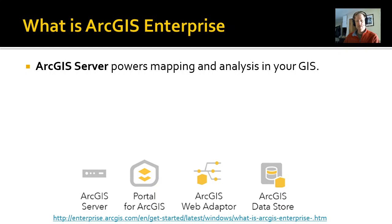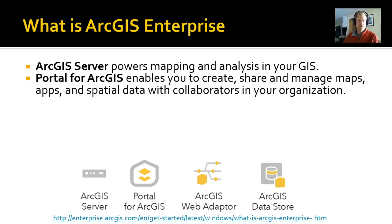The first and probably most important component is ArcGIS Server itself — this is what's powering your mapping, doing the work to retrieve and edit data and display maps. The next is the portal, which stores and manages those items. Just like in ArcGIS Online there were two things — the REST endpoint and the items catalog — these are those two things. ArcGIS Server is where the data are stored, and the portal is where the items are stored.